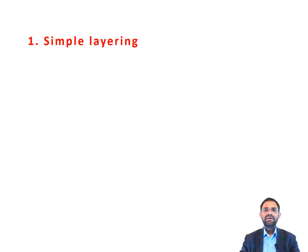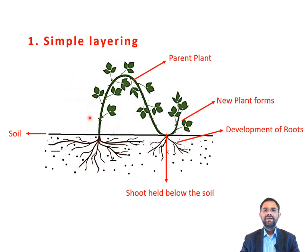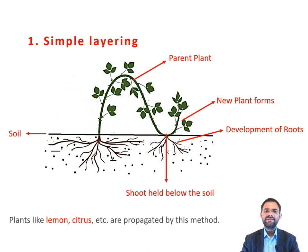The first method is simple layering. In this method, a low growing stem of more than one year is bent downward and the target region is buried in the soil. A few inches of the leafy stem must remain above the ground for the bent stem to grow into a new plant. The buried portion of the stem develops roots after two or three months when watered regularly. When the stem develops roots it is separated from the parent plant and kept in nurseries. Plants like lemon, citrus, etc. are propagated by this method.